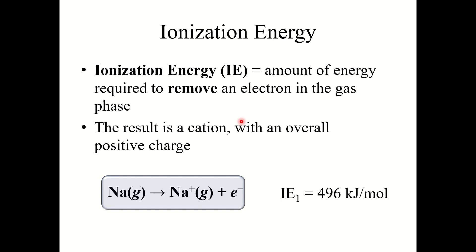Now let's talk about ionization energy. Ionization energy is the amount of energy required to remove an electron in the gas phase; the result is a cation with an overall positive charge. The actual ionization energy values are based on gases because it's much easier to isolate an individual atom in the gas phase and measure the exact ionization energy. For example, removing one electron from neutral sodium to form the sodium cation takes 496 kilojoules of energy.